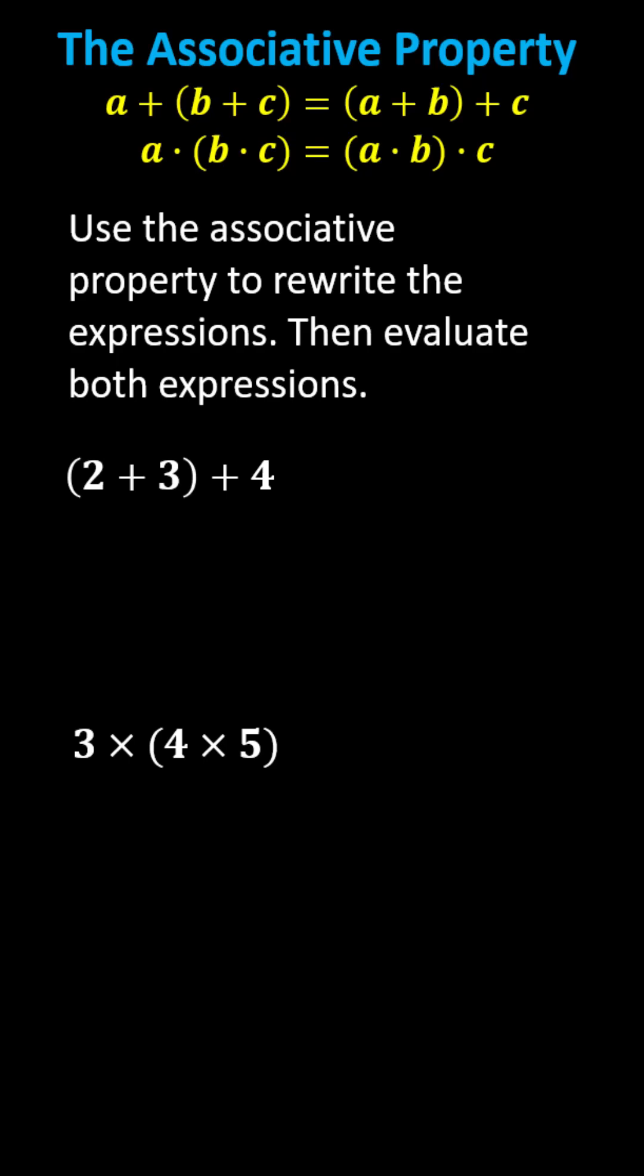Welcome to a lesson on the associative property. The associative property of addition states that A plus the sum of B and C equals the sum of A and B plus C. The grouping of the addition does not affect the result.